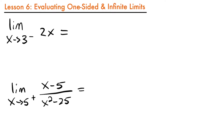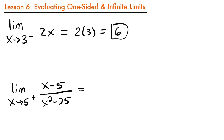However, it's not always going to be a different process. For example, take a look at this limit as x approaches 3 from the left side of 2x. This function is a continuous function — no matter what value of x we plug in, we're going to get a real defined value. So it doesn't matter what side we look at x equals 3; we're always going to have that same limit. We can just plug in as we normally would: 2 times 3 equals 6. That's no different than a limit from both sides.